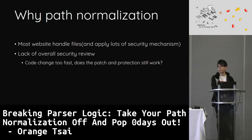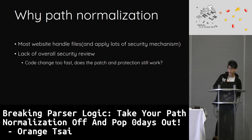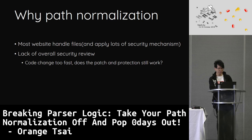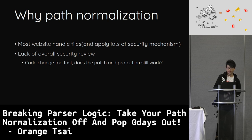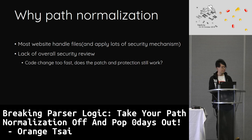Back to our topic — why do I target path normalization? Because most websites handle files. Path traversal is an old problem in many web applications, but that also means there are lots of protections and bypasses. As I mentioned, there are lots of dangerous patterns — if you can find the difference between the check and the use, you can bypass the protection. Another reason: in large projects, the code changes too fast and lacks an overall security review. For new commits, is there any side effect or bypass of an existing security mechanism? Who knows?